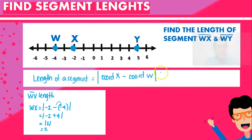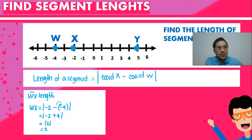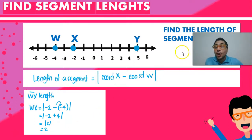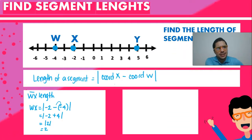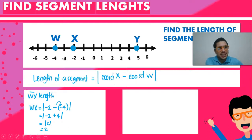Note that because we have an absolute value, the length of a segment is always going to be a positive number. It doesn't matter if it's an integer or a decimal — it's always going to be positive, so please remember that.